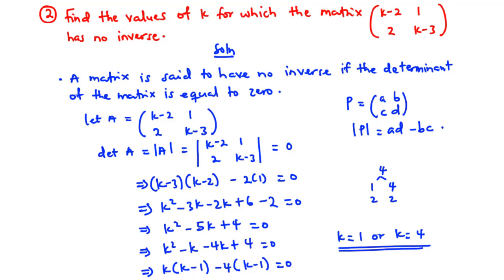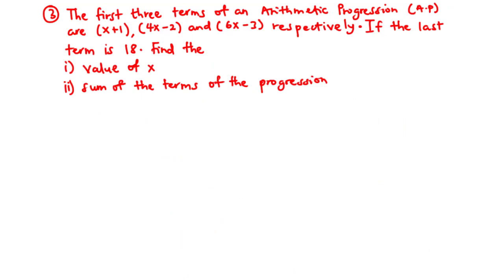Let's move on to the third question. The first three terms of an arithmetic progression (AP) are x plus 1, 4x minus 2, and 6x minus 3 respectively. If the last term is 18, find (i) the value of x, and (ii) the sum of the terms of the progression.